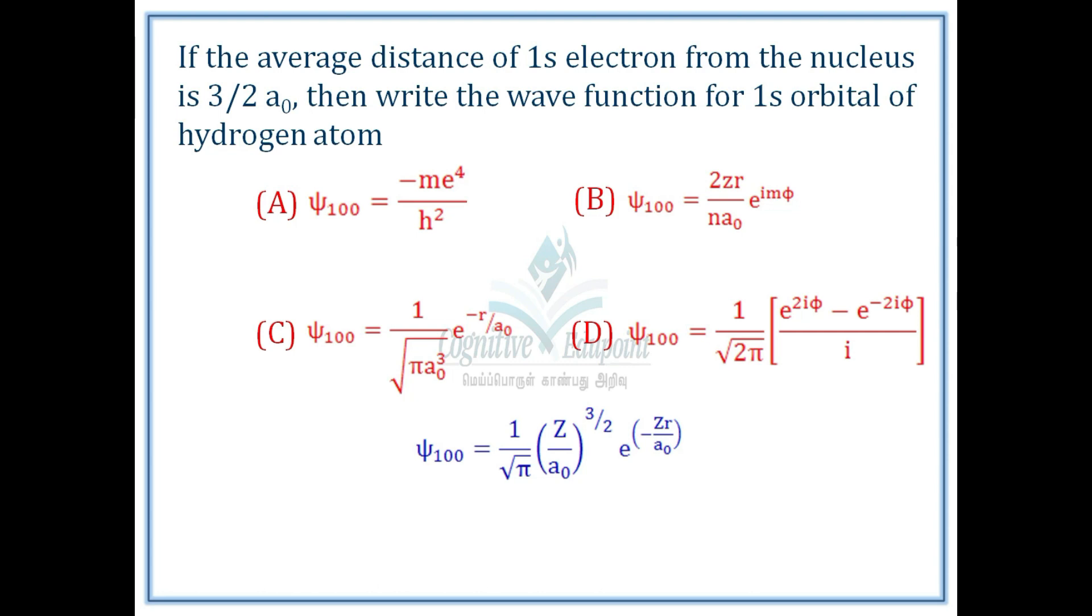Then we substitute the atomic number and average distance of 3/2 a0. But in this case, we can substitute simply atomic number 1 for z.